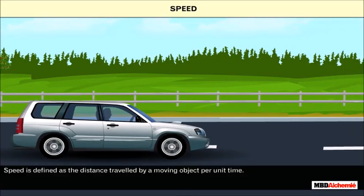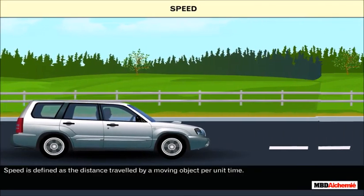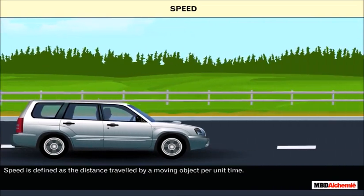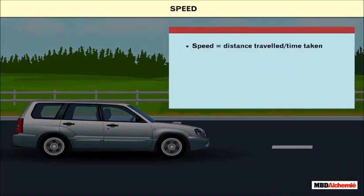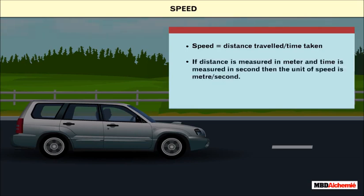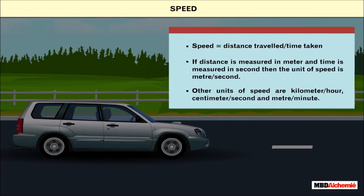Speed is defined as the distance traveled by a moving object per unit time: speed equals distance traveled divided by time. If distance is measured in meters and time in seconds, the unit of speed is meters per second (m/s). Other units of speed are kilometers per hour, centimeters per second, and meters per minute.